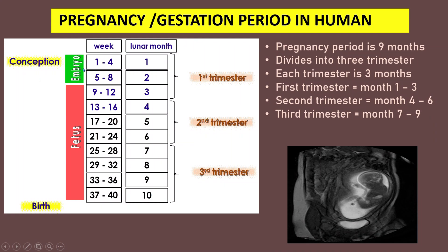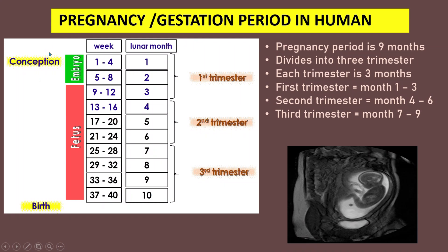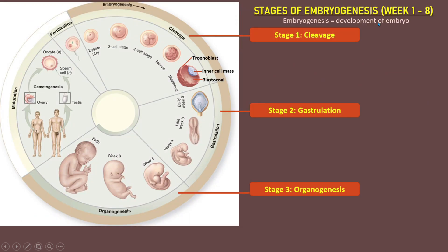In this subtopic, we will learn about how the embryo develops from the zygote after fertilization. Embryogenesis is the development of the embryo from the zygote, occurring between week 1 and week 8 after fertilization. There are 3 stages: stage 1 is cleavage, stage 2 is gastrulation, and stage 3 is organogenesis.